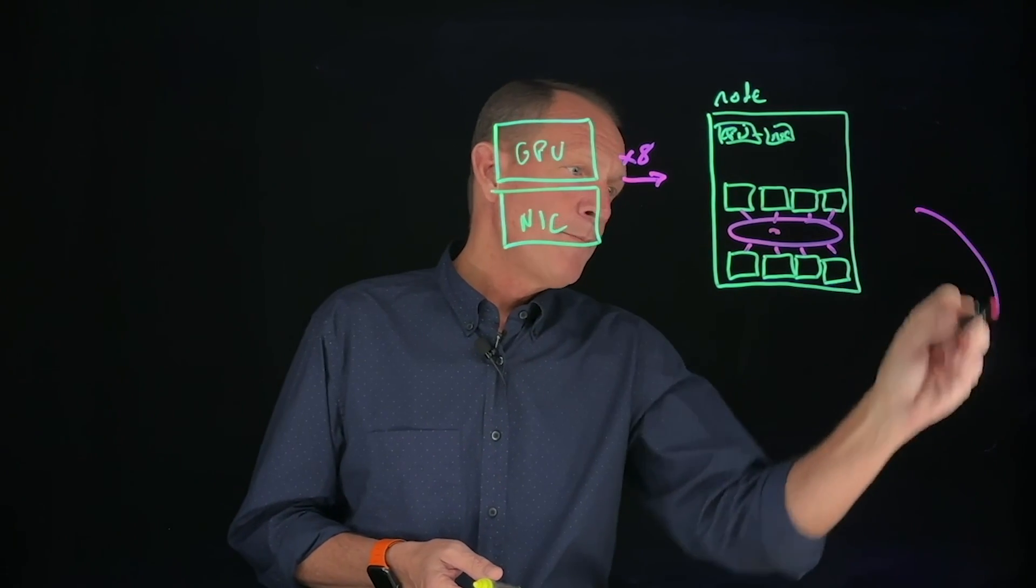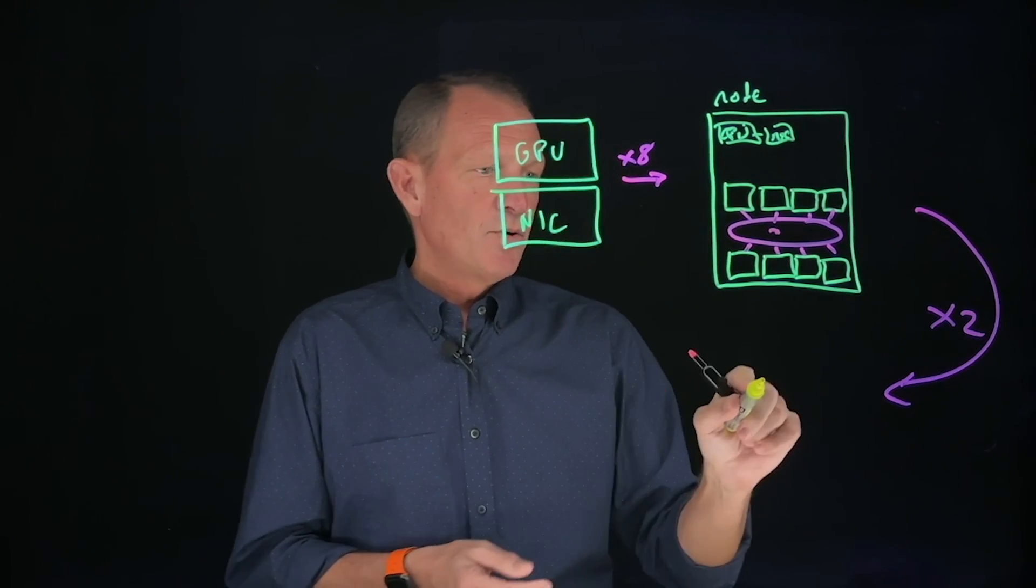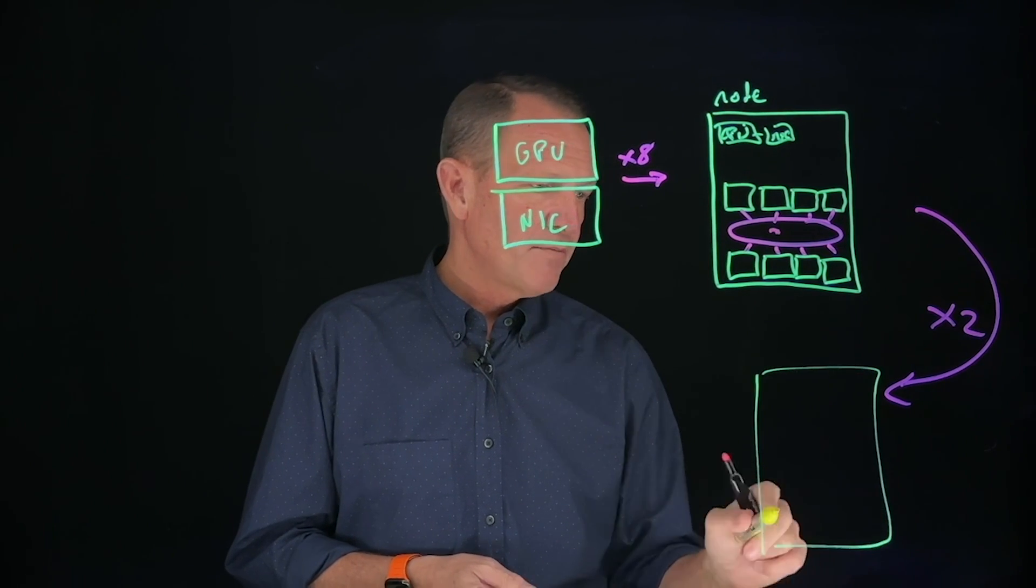From here, we take a node and can generally put two of those in a rack - a nice, very typical rack in a data center.